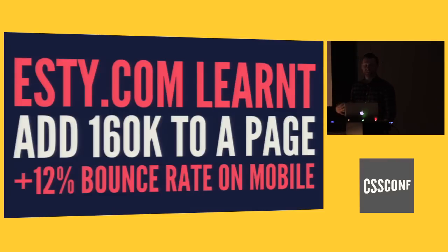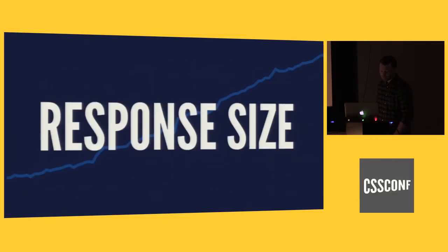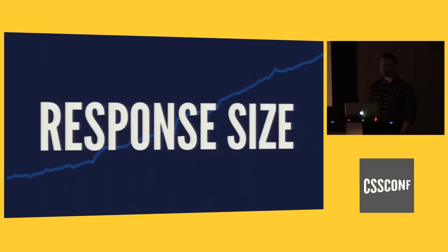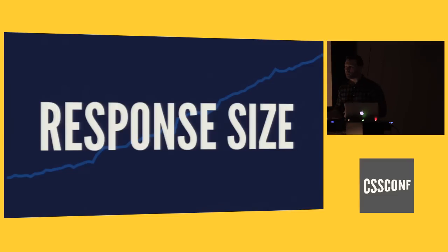Etsy learned that when they added 160K to a page, they actually got a 12% plus bounce rate on mobile, which is a pretty alarming stat. From 2010 until 2014, response size grew by two and a half times. Your average response size, taken from the HTTP archive, grew from about 700K to somewhere like 1800K or beyond. And that's pretty crazy because mobile phones — you just go down to the pier and suddenly your phone doesn't work and you can't tweet at anybody, and you can't actually meet that friend you're trying to check the map for. And that really sucks, and I think we can all empathize with that.